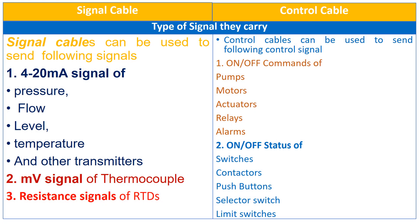While the control cables can be used to send the following control signals. First, on-off command of pumps, motors, actuators, relay, alarms and many more. Second, the on-off status signal of switches, contactors, push button, selector switch and limit switches.